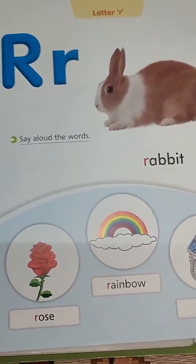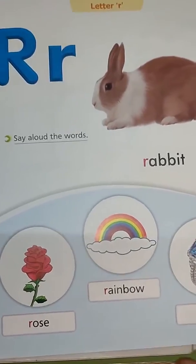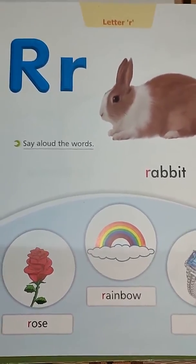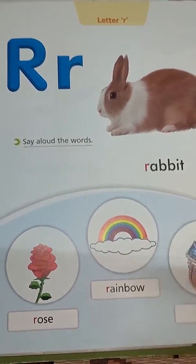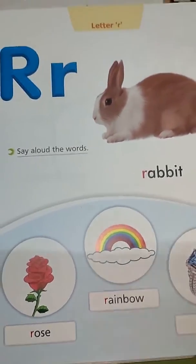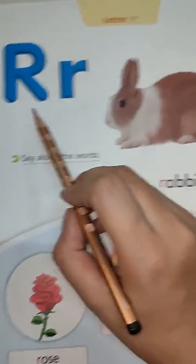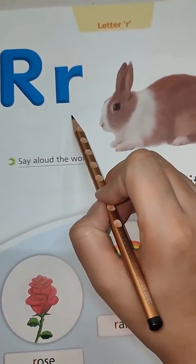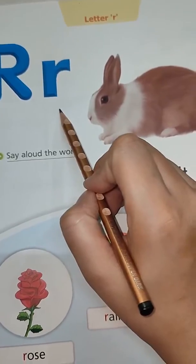So let's identify the letter R with its picture. Look at this video. Today we are going to start the identification of letter R with small cursive letter. This is R uppercase, lowercase and small cursive letter.